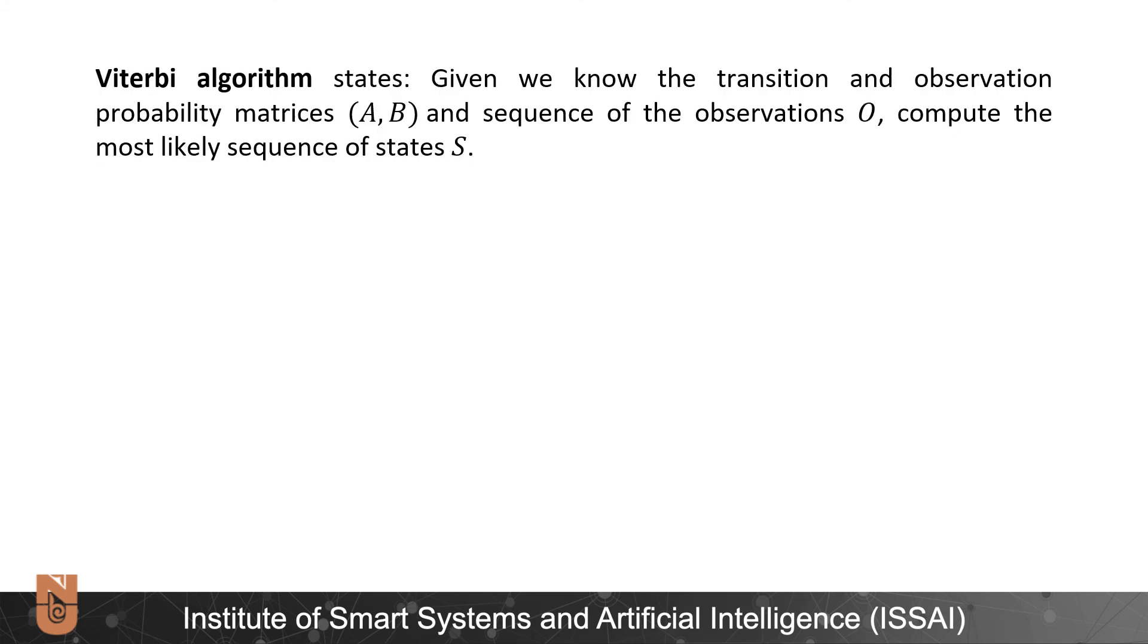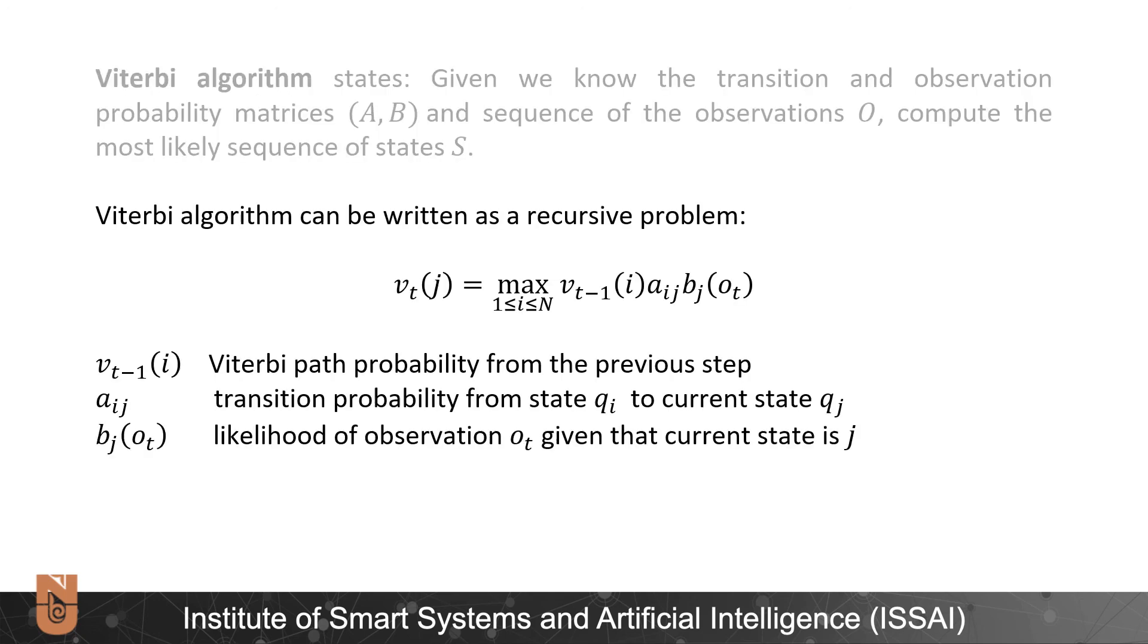Viterbi algorithm states: given we know transitions and observation probabilities matrices A and B respectively and sequence of the emissions O, compute the most likely sequence of states S. Viterbi algorithm can be written as a recursive problem. So Viterbi path probability at the current state j is equal to the maximum of Viterbi path probabilities from the previous steps multiplied by transition probability from state qi to current state qj and multiplied by likelihood of observation ot given that current state is j.